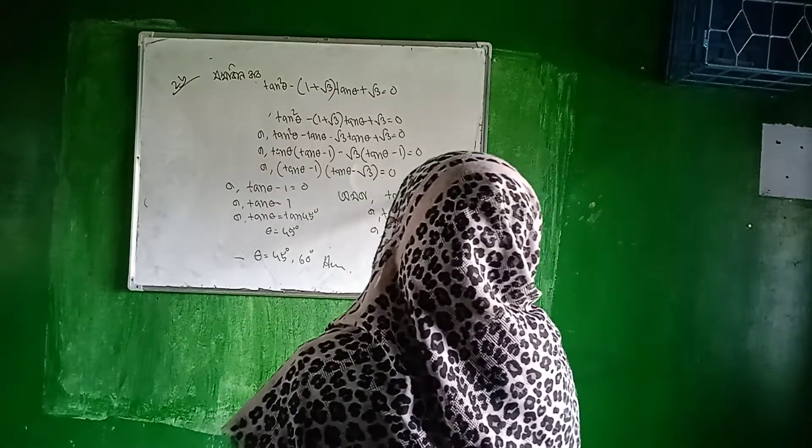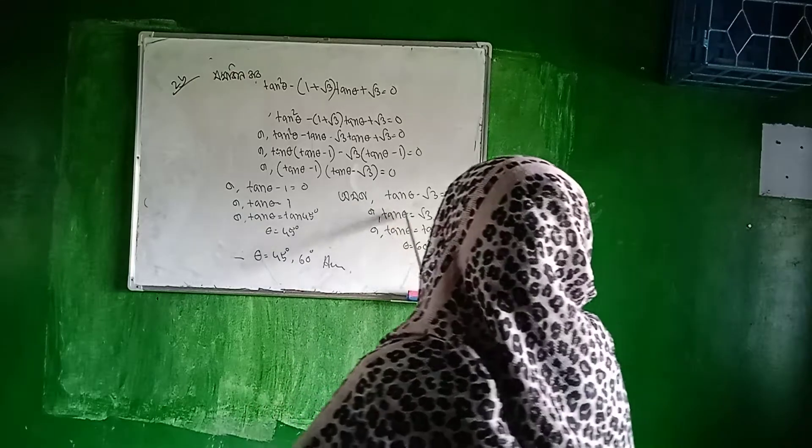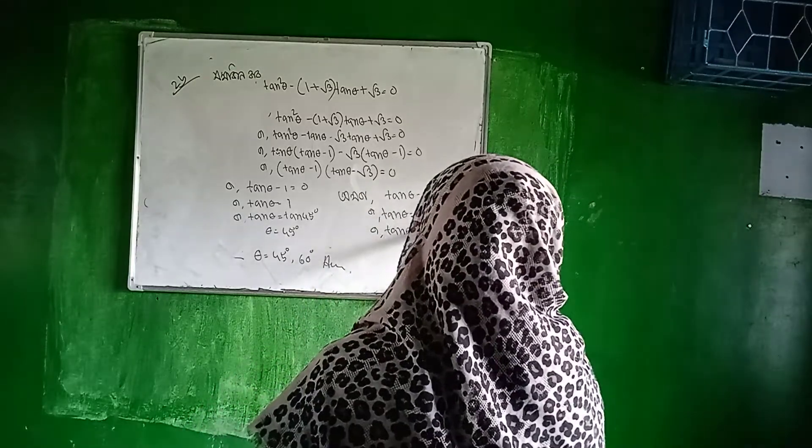2 theta minus root 3 equal to 0. 2 theta minus root 3 equal to root 3.